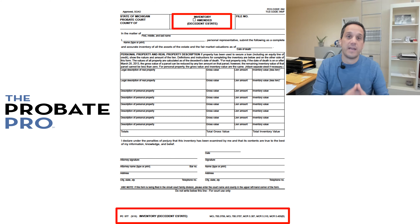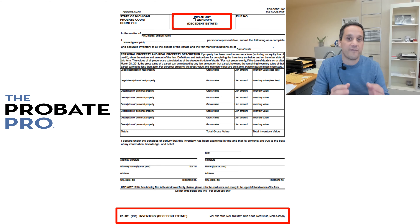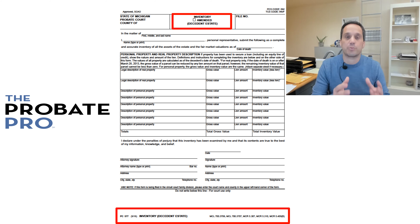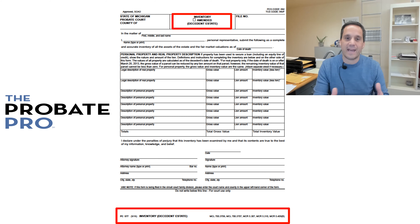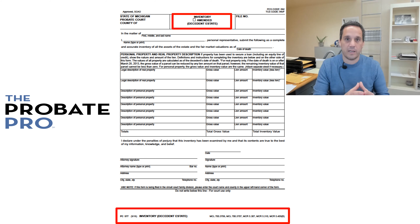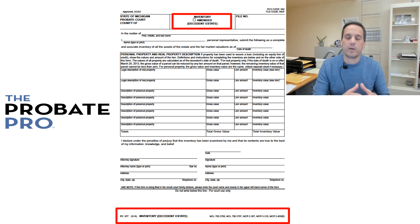This form must be presented to the probate court within 91 days of the appointment of the personal representative. Notice I didn't say the word 'filed,' because in Michigan the presentation of the inventory in an unsupervised administration is the requirement. That means you bring the inventory to the probate court, the court looks at it and calculates the gross inventory fee. It does not require the filing of the inventory unless the estate is supervised or ordered by the probate court.